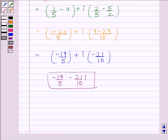So we have reduced the given complex number to the form A plus iota B. This completes the session. Bye and take care.